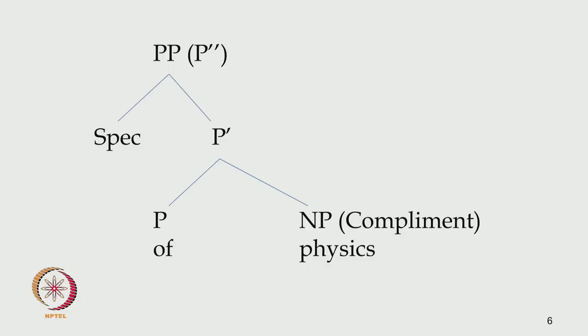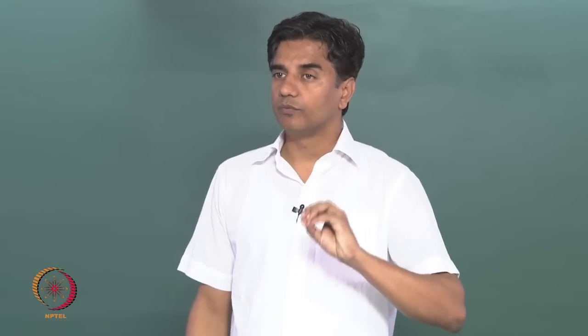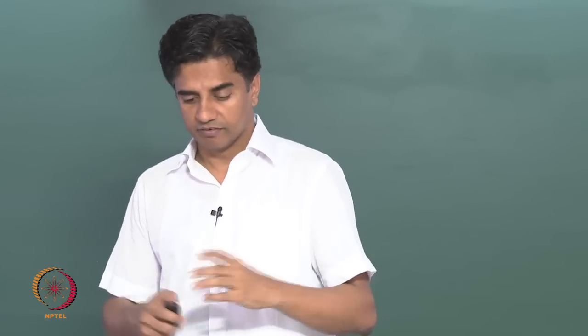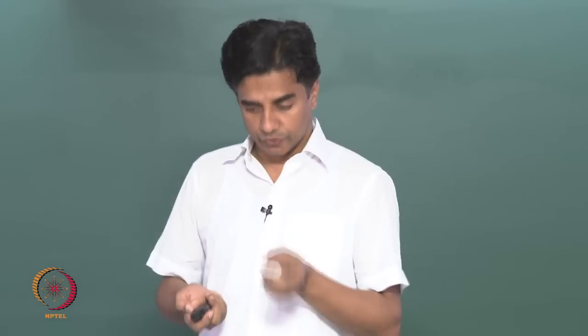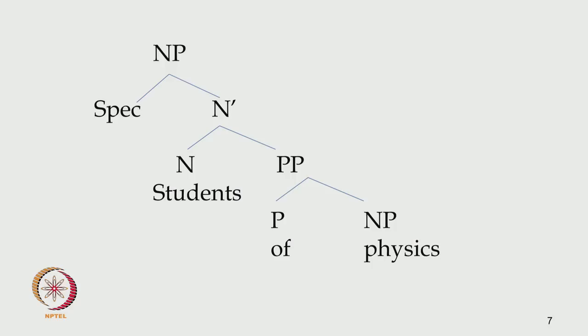Sometimes we may not have a complement, or we may have one. We may not have a specifier, or we may have one. Irrespective of their physical presence, we have these spaces for them. However, we do not have a phrase if the head is not present — without the head, we cannot conceptualize the phrase. The head is not significant just for its name; the whole existence of the phrase depends on the head.